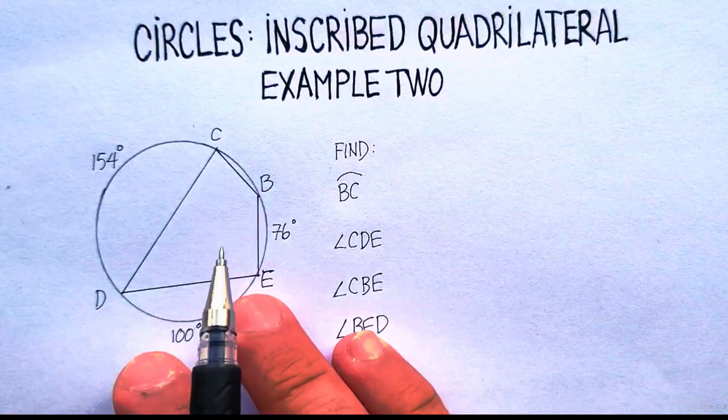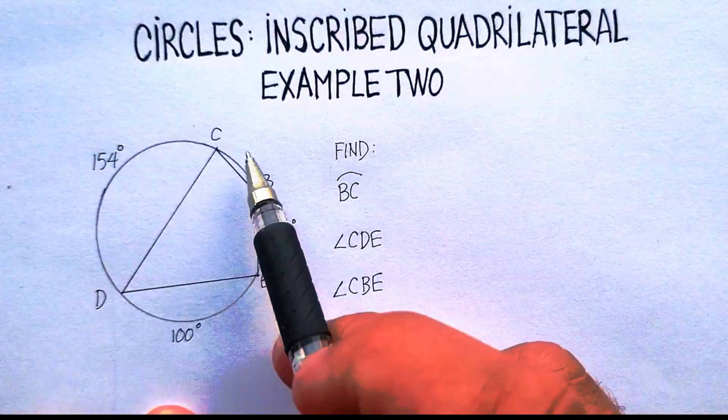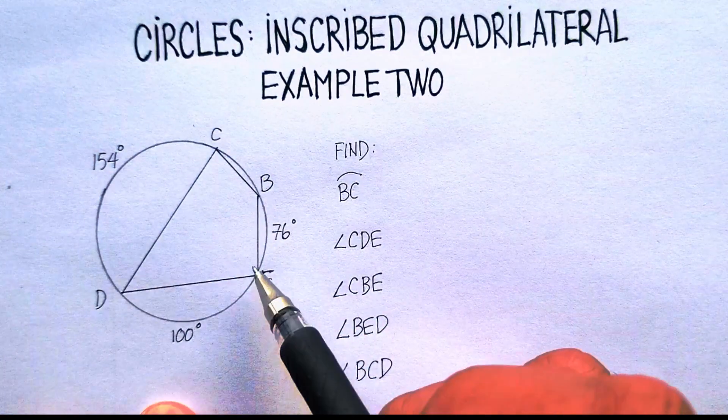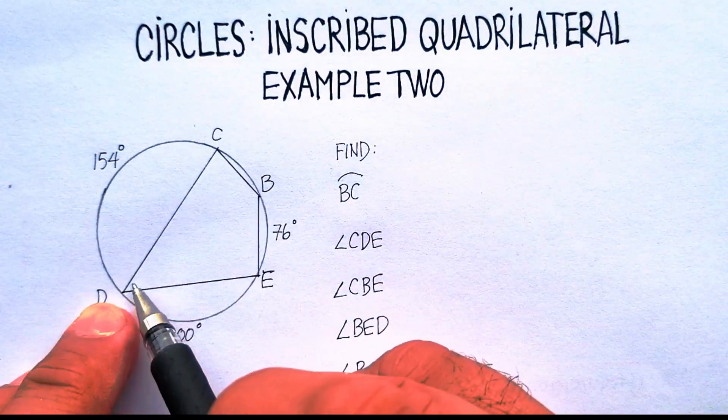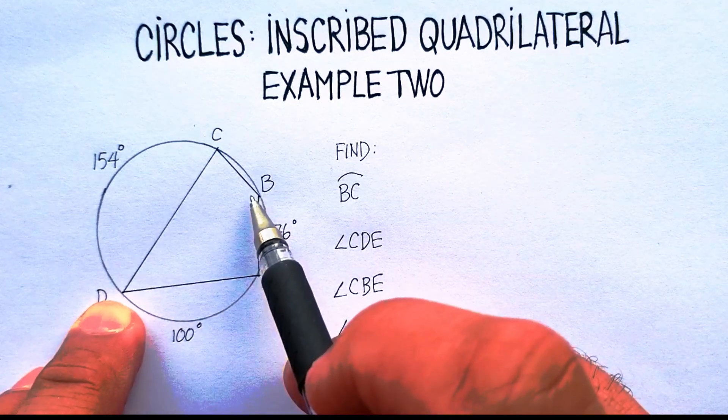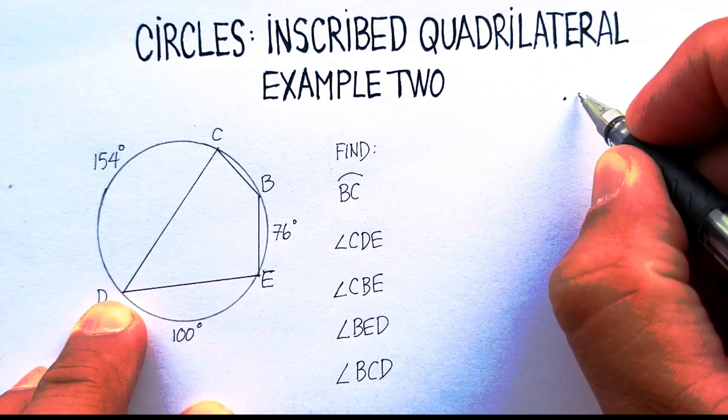Now, when I approach a problem like this, I think of a couple things. I ask myself, what do I know about quadrilaterals that are inscribed? And I know a couple things. I know that, for example, opposite angles are supplementary. So I'm just going to keep that at the top of my thoughts.